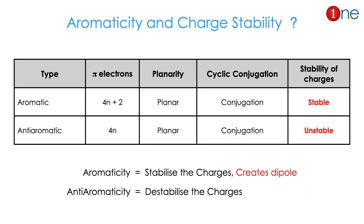Before we get into the dipole, we should know aromaticity and charge stability. Aromatic systems are 4n+2 systems — planar, conjugated, and most importantly, they stabilize the system. Anti-aromatic systems are 4n systems, similar to aromatic but with one key difference: they destabilize the system. So aromaticity stabilizes charges, while anti-aromaticity destabilizes charges.